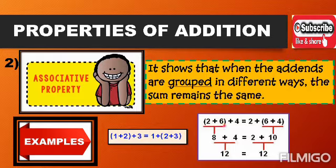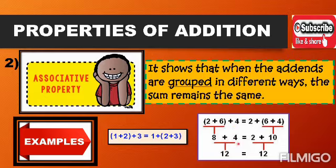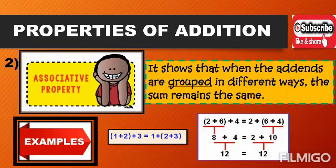For the second example, I have 2, 6, and 4. On the left side, I group the 2 and 6 first: (2 + 6) + 4. The sum of 2 plus 6 is 8, then 8 plus 4 equals 12. On the right side, I group the 6 and 4: 2 + (6 + 4). The sum of 6 plus 4 is 10, then 2 plus 10 equals 12. Even if you regroup them, the sum does not change — it is still 12.